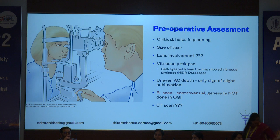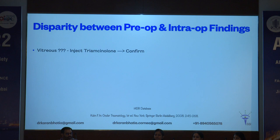B-scan is controversial — generally it's not done in open globe injuries, but you can probably do a CT scan after patching the eye. Whenever there's a disparity between the preoperative and intraoperative findings and you're not sure whether there's any vitreous prolapse or not, the first step would be to inject triamcinolone inside and then confirm its presence.